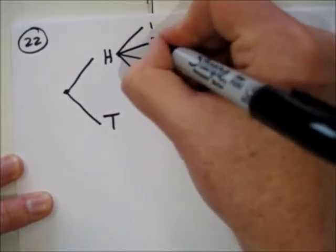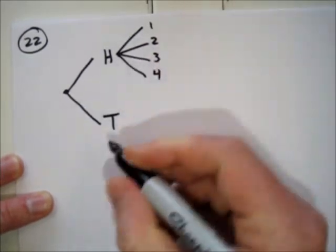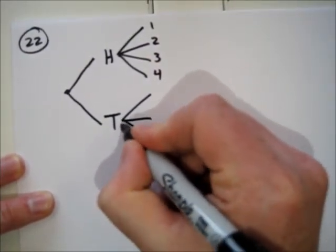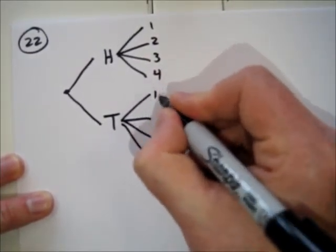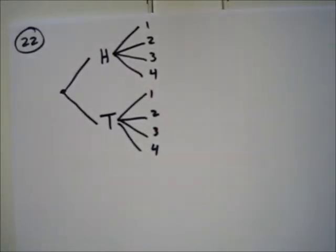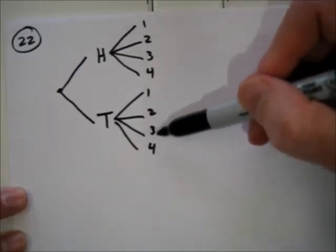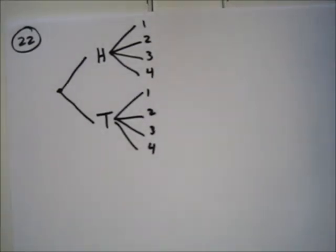You can either flip and get heads or flip and get tails. Then no matter which you end up getting on the flip, you're going to draw a number from a hat, and in each case you have four options. If you flip heads, you could draw a 1, 2, 3, or 4. And if you flip tails, you could draw a 1, 2, 3, or 4. The number of ending points, or leaves on our tree, indicate the number of items in the sample space.